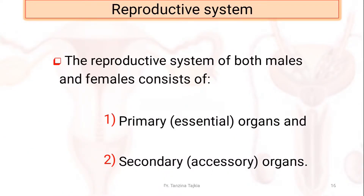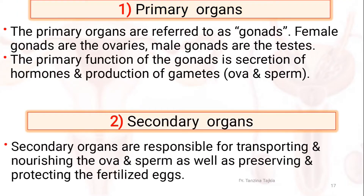The reproductive system of both male and female consists of primary organs and secondary organs. Primary organs are referred to as gonads — in the case of female, these are the ovaries; in the case of male, these are the testes. The primary functions of the gonads are secretion of hormones and production of gametes. Secondary organs are responsible for transporting and nourishing the ova and sperm, as well as preserving and protecting the fertilized egg.